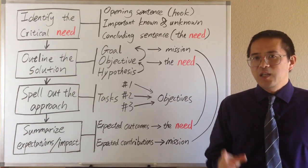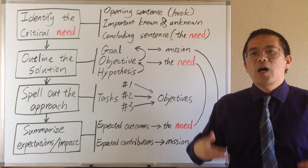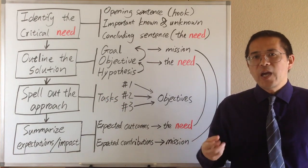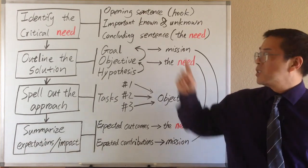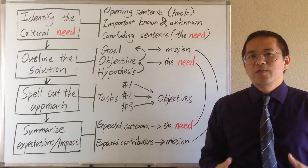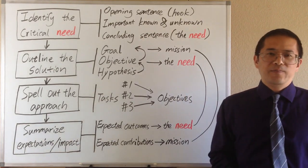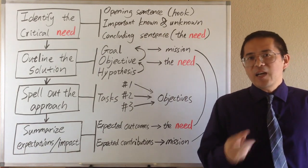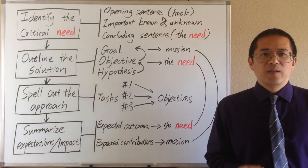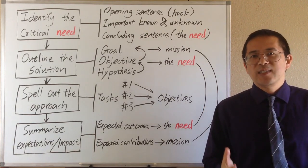The key of the third paragraph is to demonstrate that we are reliable and well-organized. Not only do we have a good idea, which has been presented in the first paragraph, but also we have a feasible plan to realize that good idea. Lack of a detailed action plan may be the number one reason that a proposal is declined.